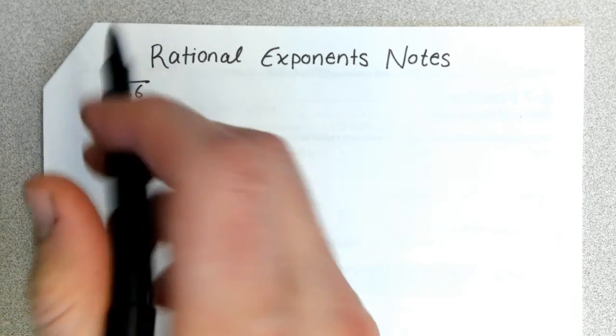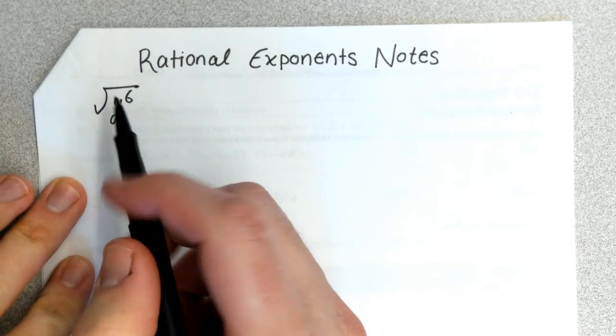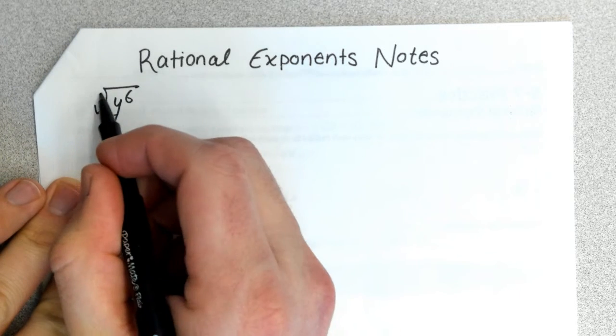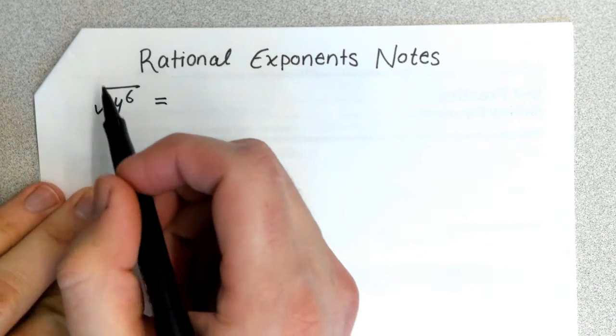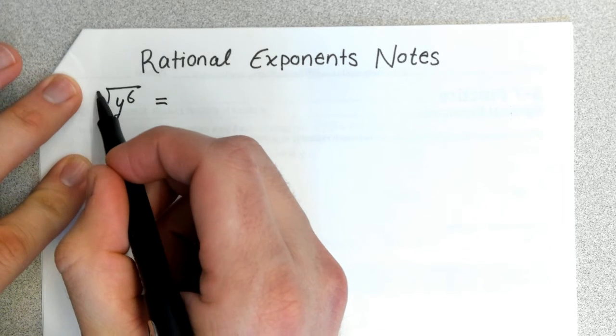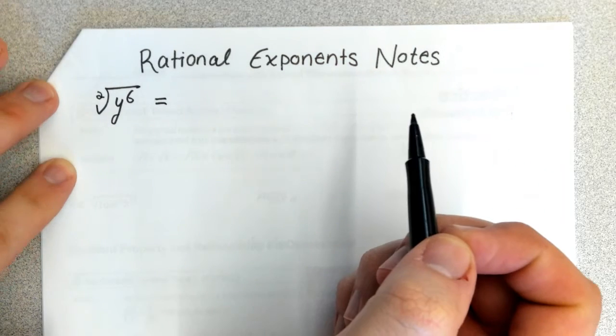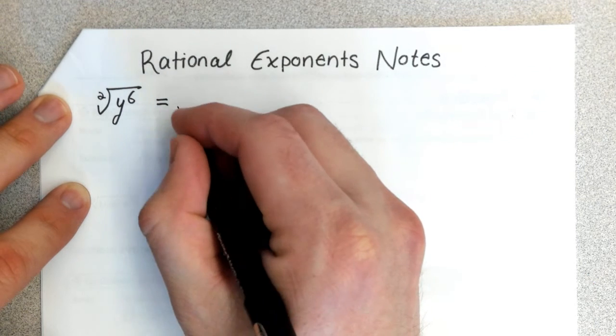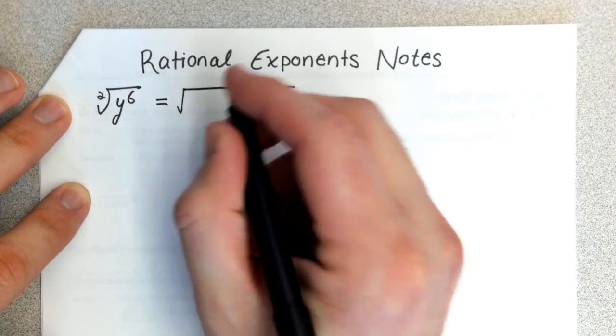This is the square root of y to the sixth. If we wanted to simplify that, back when we learned about square roots, we talked about how there's a two here—we just never write it. To simplify the square root of y^6, you could list out six y's and look for pairs of y.